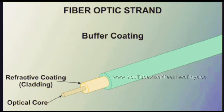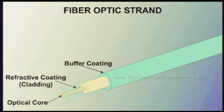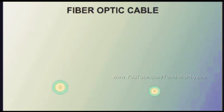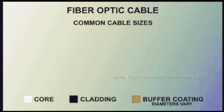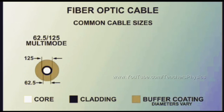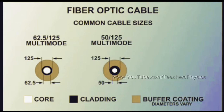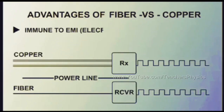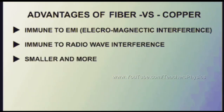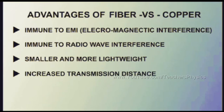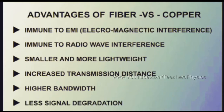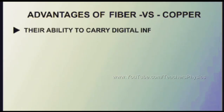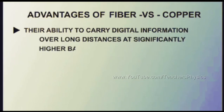The buffer coating also prevents light from escaping the strand and may have color coding for identification purposes. Fiber optic strands are typically bundled into a cable. Fiber specifications list the core and cladding diameters as a ratio; multimode fiber is usually either 62.5/125 microns or 50/125 microns. Fiber optic cables have many advantages over copper cable, including immunity to electromagnetic interference, smaller and lighter form factor, greater transmission distance, higher bandwidth, and less signal degradation. The greatest advantage is their ability to carry digital information over long distances at significantly higher rates than copper.